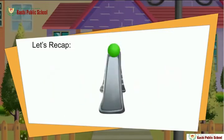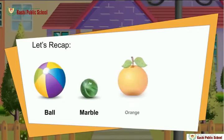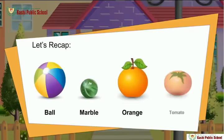A sphere only rolls because it has a curved surface. A ball, a marble, an orange, and a tomato are all spheres.